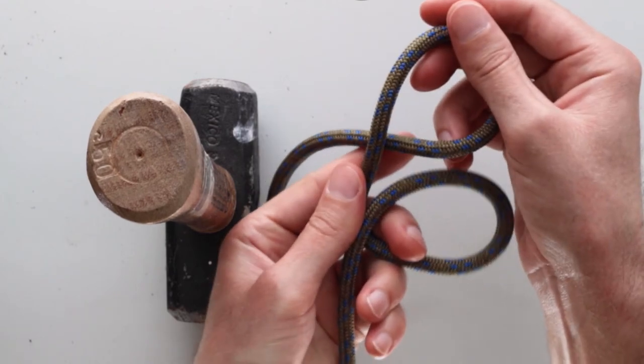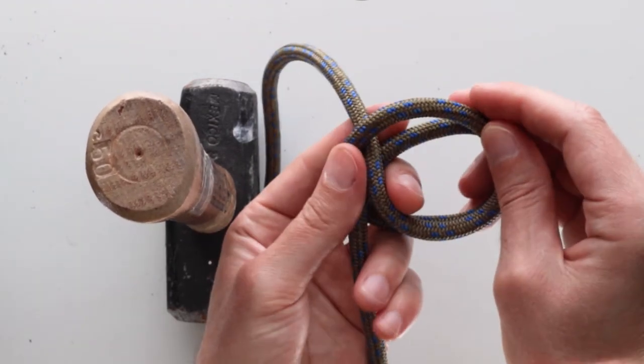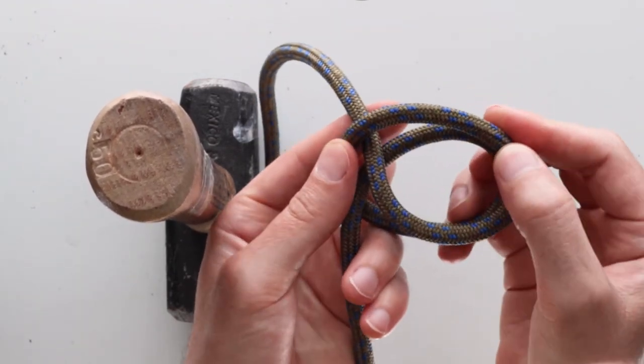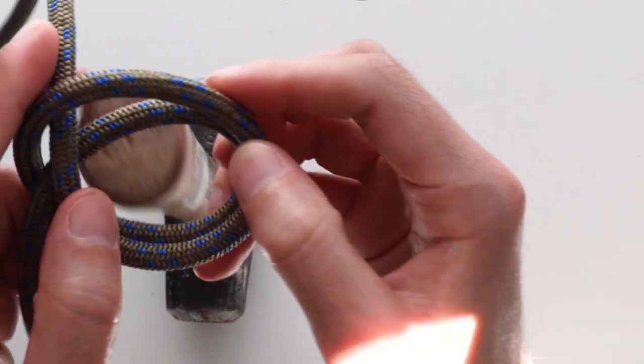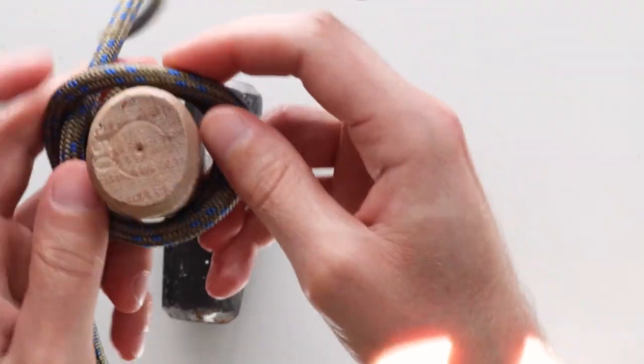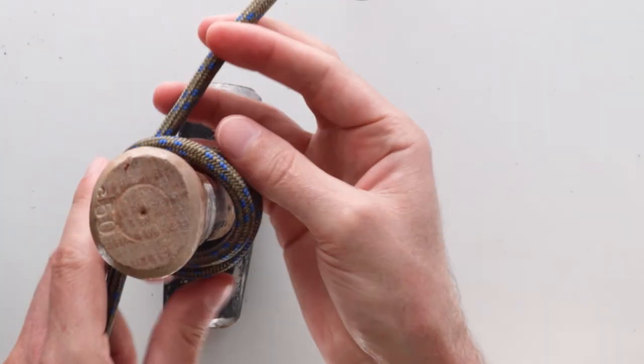You have two loops and then you just pass that second loop on top of your first loop. Once you've done this, it's quite simple. All you do is take that and drop it on top of your pole. Then you pull tight.